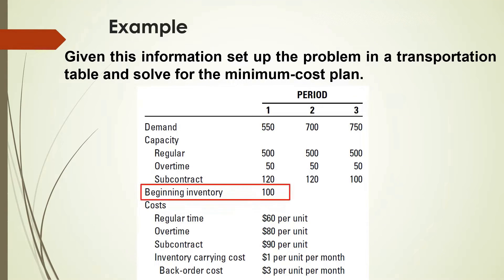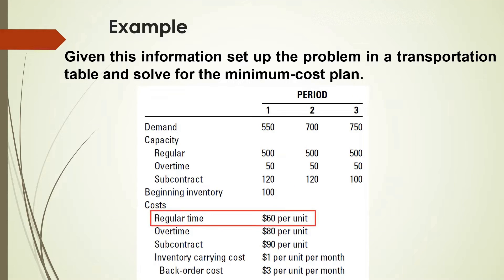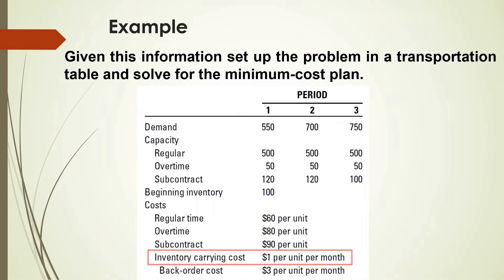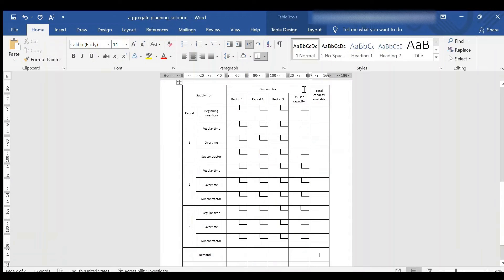It is given that the beginning inventory is 100 units. The given costs are $60 for production of 1 unit during regular time, $80 for production of 1 unit during overtime, $90 for production of 1 unit by the subcontractor. The cost of carrying 1 unit in inventory is $1 per period, and the backorder cost is $3 per unit per period.